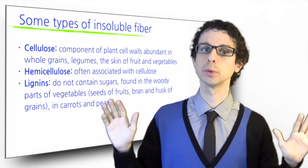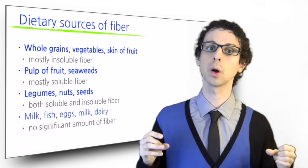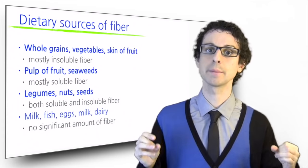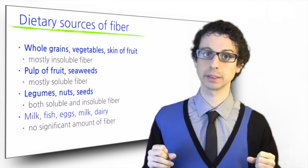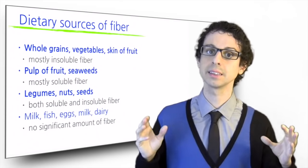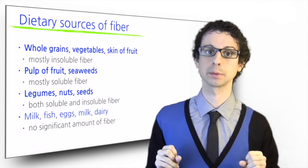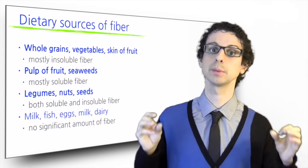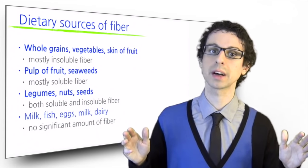As a general rule, insoluble fiber is prevalent in most whole grains, vegetables, and the skin of fruit, while soluble fiber is prevalent in the pulp of fruit and seaweeds. Legumes, nuts, and seeds contain both types of fiber in similar amounts. Also, remember that fiber is associated with plant foods, so there is no significant amount of fiber in meat, fish, eggs, milk, and dairy.